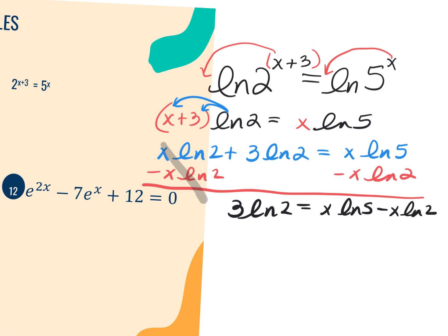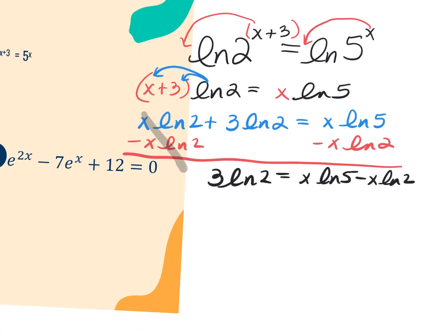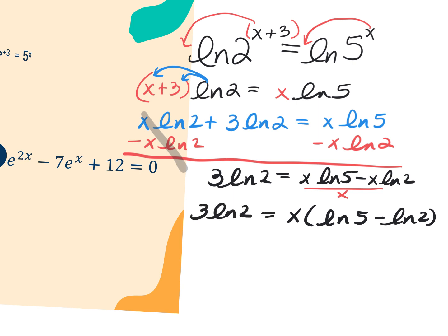I need to factor out a GCF of x from the right side. So pulling out x, I'm left with LN of 5 minus LN of 2. And it's equal to 3 LN of 2, which is a number — a calculator question. To get x by itself, all we're doing is dividing both sides by LN of 5 minus LN of 2.